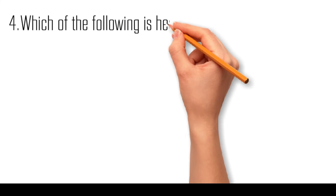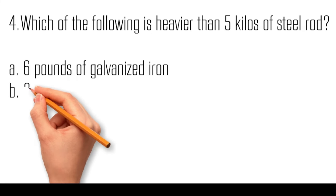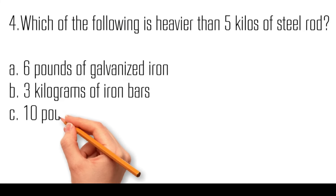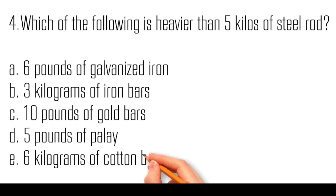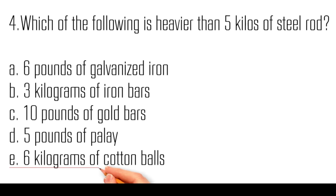Which of the following is heavier than five kilograms of steel rod? Six pounds of galvanized iron; three kilograms of iron bars; ten pounds of gold bars; five pounds of pellet; six kilograms of cotton balls. The item that is heavier than five kilograms of steel rod is six kilograms of cotton balls.